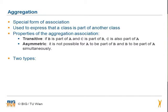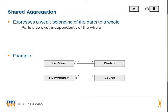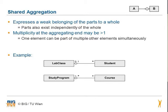There are two types of aggregation, the shared aggregation and the composition. A shared aggregation expresses a weak belonging of the parts of a whole. That means that parts also exist independently from the whole. The multiplicity at the aggregating end may be bigger than one.